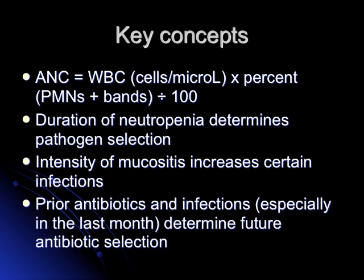It is also important to know the history of antibiotics the patient received prior to chemotherapy, because that increases the chances of having a resistant bacterium. If the patient spikes a fever while on a certain antibiotic regimen, the bacteria that grows this time will probably be resistant. It is also important to know the organisms the patient had before.